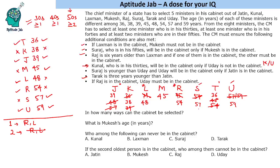So there are 2 ways to select the cabinet. Mukesh's age is 45 — this could have been answered by partially solving the set, so keep in mind that you can answer some questions without completing the entire set. Who can never be in the cabinet? Looking at both cases, Kunal can never be in the cabinet. For the last question, if the second oldest person (Suraj, age 57) is in the cabinet, who cannot be in the cabinet? In that scenario, Raj cannot be in the cabinet.